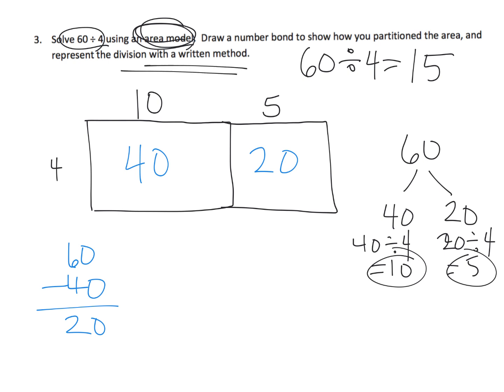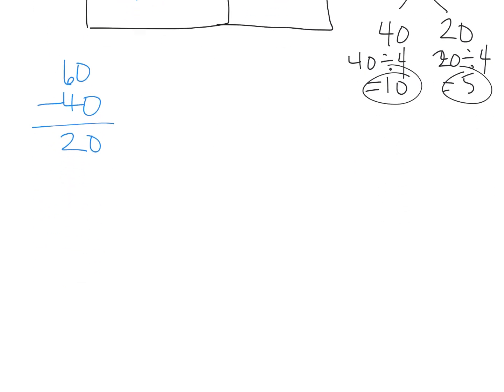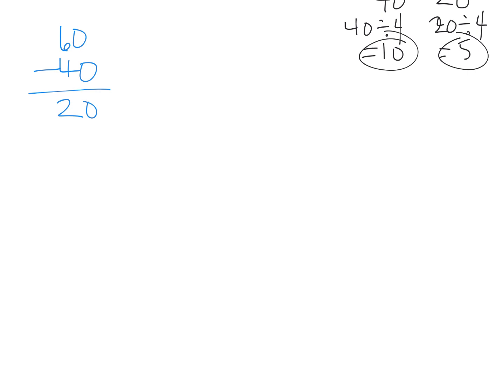Now it says we're supposed to represent this division with the written, the standard algorithm. So let's go ahead and do that. So we've got 60 divided by 4. 6 tens divided by 4 in 4 groups means each group is going to get 1 ten. We've used up 4 of our tens, and we have 2 tens left over. We have 2 tens left over and no ones at all, which means we can cash in everything. And we're going to end up with 20 ones.